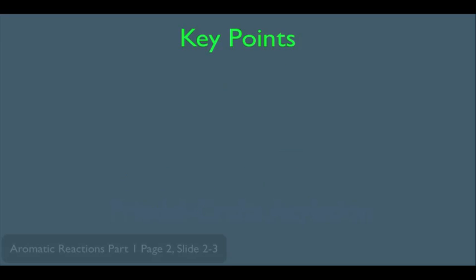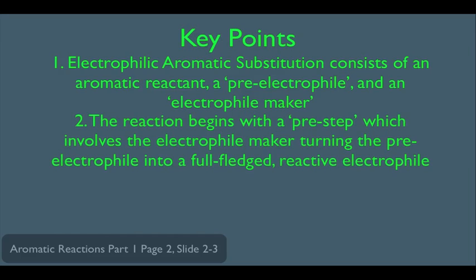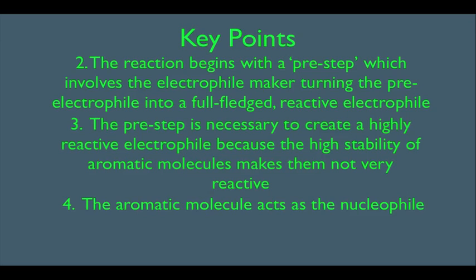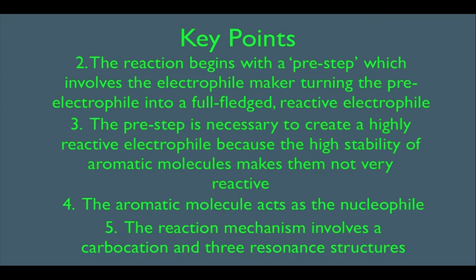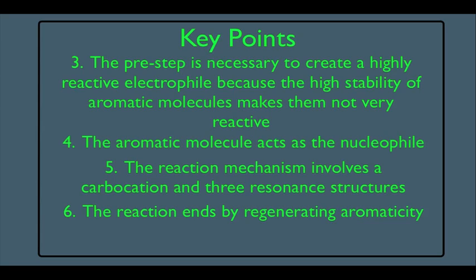Key points recap: Number one, electrophilic aromatic substitution consists of an aromatic reactant, a pre-electrophile, and an electrophile maker. Two, the reaction begins with a pre-step where the electrophile maker converts the pre-electrophile into a full-fledged reactive electrophile. Three, the pre-step is necessary because the high stability of aromatic molecules makes them not very reactive. Four, the aromatic molecule acts as the nucleophile and attacks the electrophile. Five, the mechanism involves a carbocation and always three resonance structures. Six, the reaction ends by regenerating an aromatic molecule.